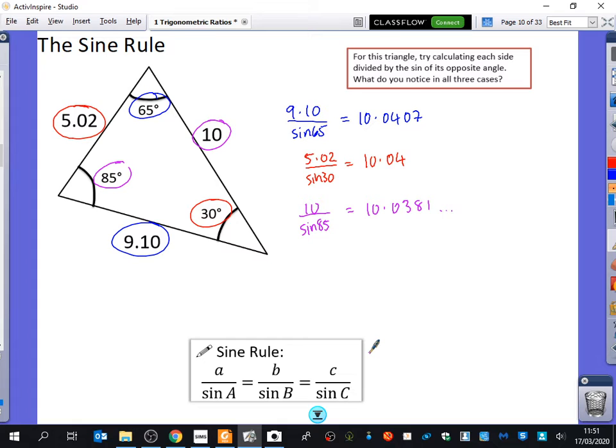So, does anybody think they can spot what might have happened to not give us exactly the same value for these? Because they do give you the same value to two decimal places. Two decimal places, they will give you 10.04. But why are we not getting exactly the same for all three?